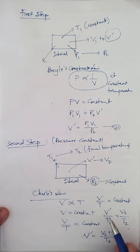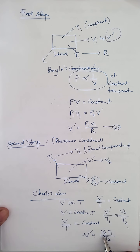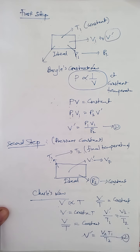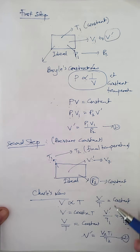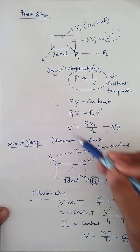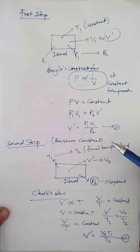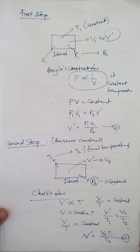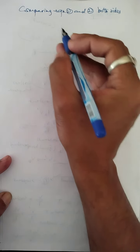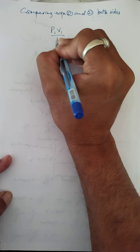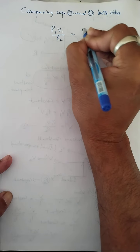From this relation, making V' the subject: V' = V2·T1 / T2. Let this be equation 2. Now we have two equations from step 1 and step 2, both with V' as the subject. If I compare equation 1 and equation 2, since both left-hand sides are equal, the right-hand sides must also be equal.